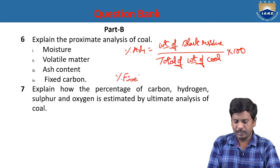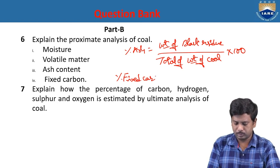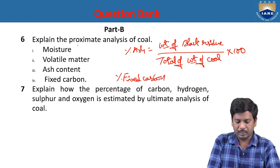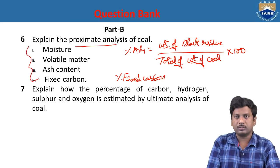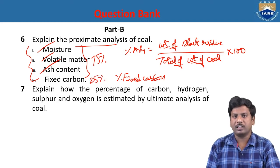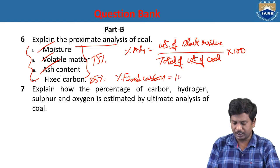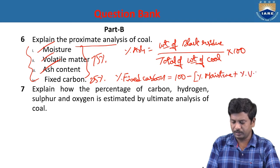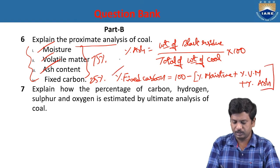Fixed carbon is determined indirectly. The proximate analysis contains four components total. Out of these four, three can be directly determined — moisture, volatile matter, and ash. The fixed carbon is determined indirectly by: fixed carbon = 100 − (percentage of moisture + percentage of volatile matter + percentage of ash).